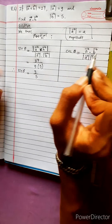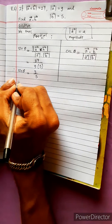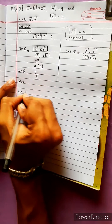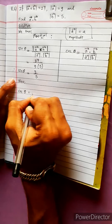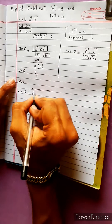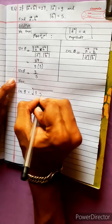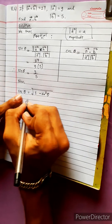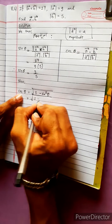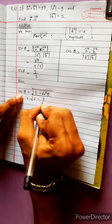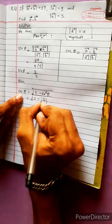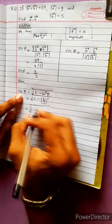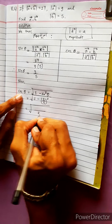Now, cos theta equals using the trigonometric identity: 1 minus sine squared theta. So 1 minus sine theta 3 by 5, squared — that gives 1 minus 9 by 25.